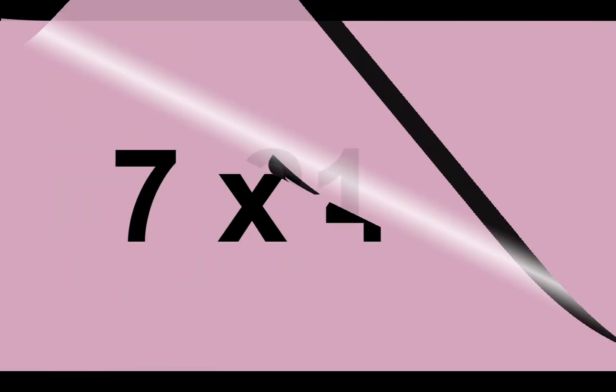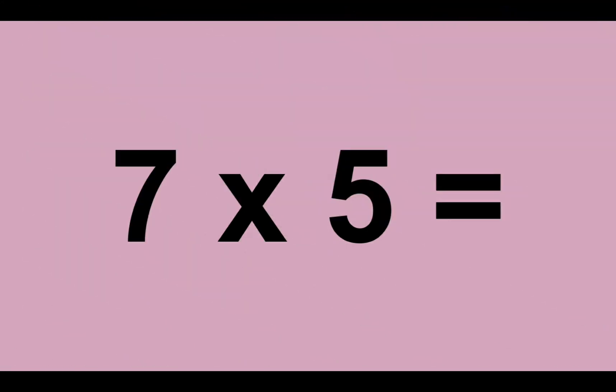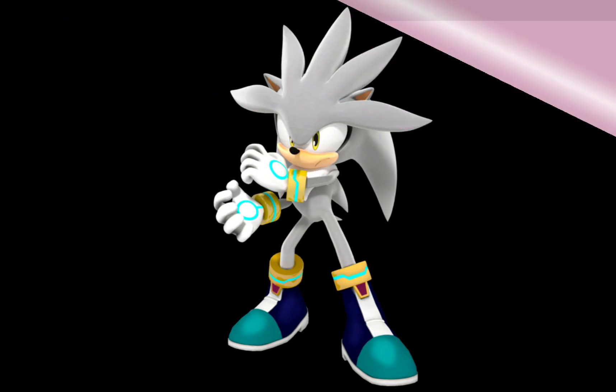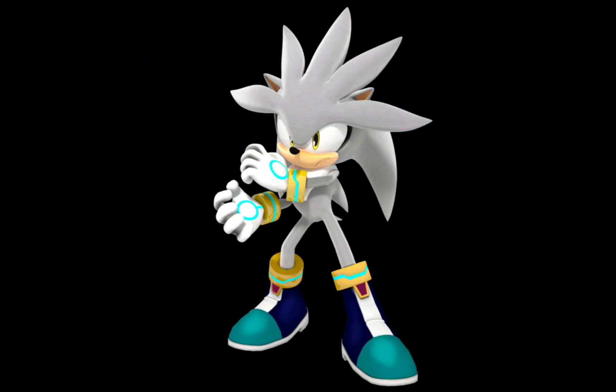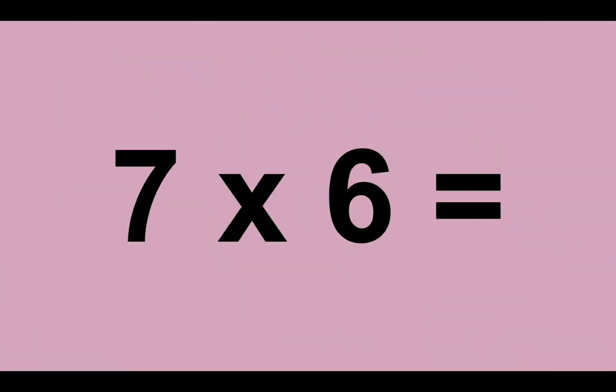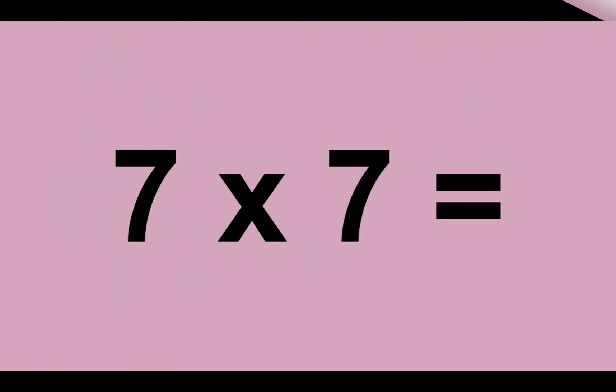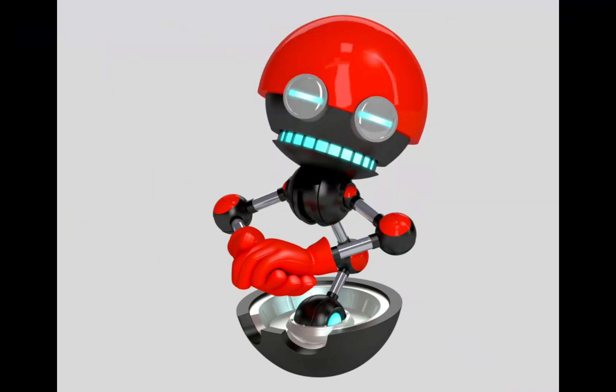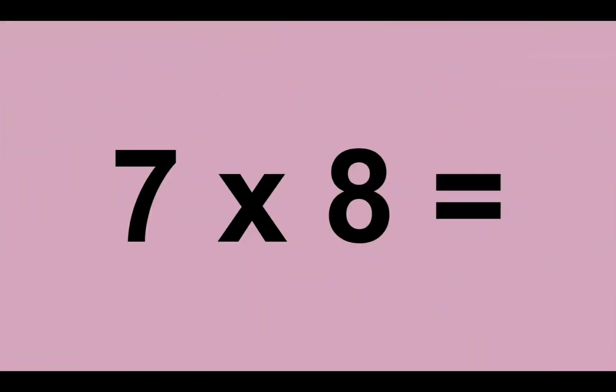Seven times four equals twenty-eight. Seven times five equals thirty-five. Seven times six equals forty-two. Seven times seven equals forty-nine. Seven times eight equals fifty-six.